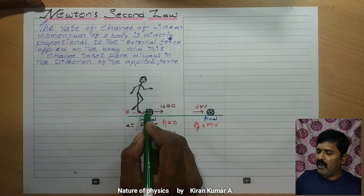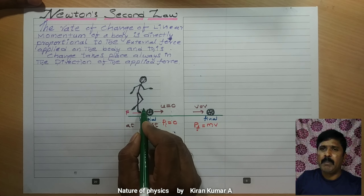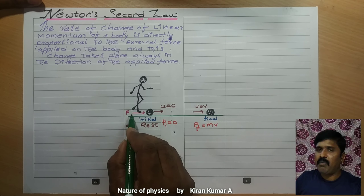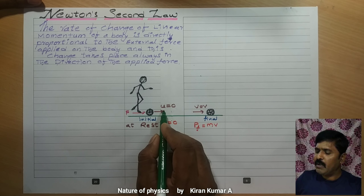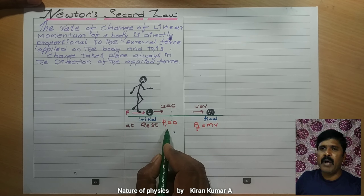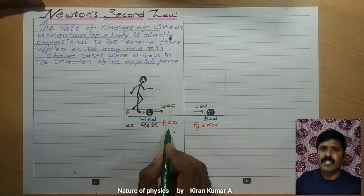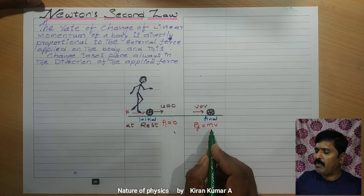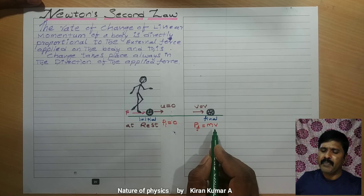For example, a football player kicks a football with a force F. Initially the ball is at rest, so the initial momentum is also zero. The final velocity is V, so the final momentum is mV.